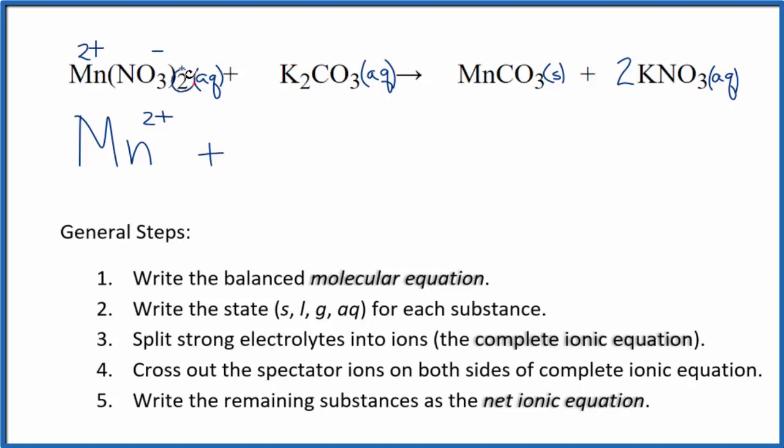Plus we have two nitrate ions here, so two of these nitrate ions, plus potassium - that's in group 1 on the periodic table, that's 1+. Carbonate ion, that's 2-. So we have two potassium ions, and then we have the carbonate ion, that's CO3 2-. These are the reactants in our net ionic equation.